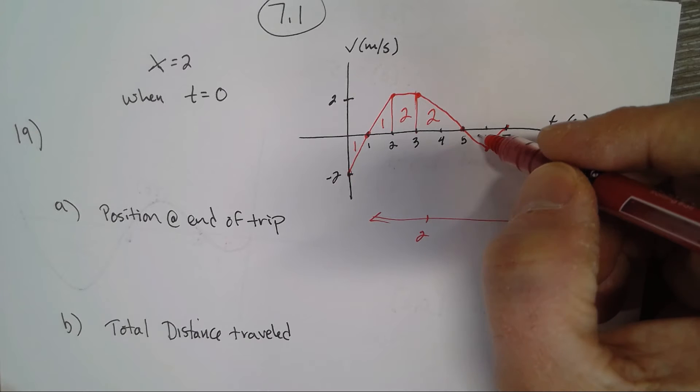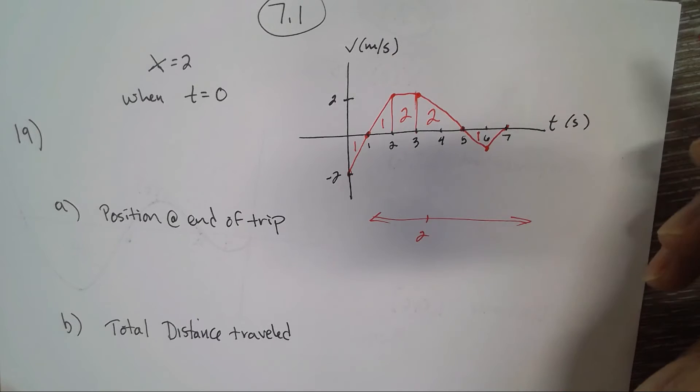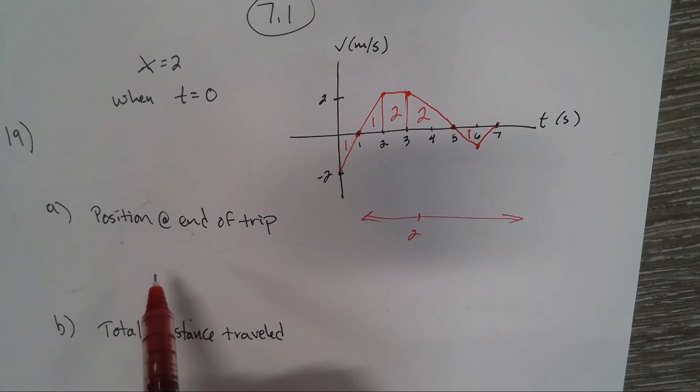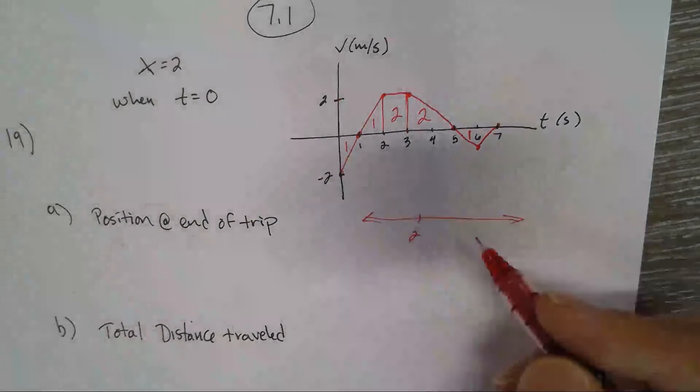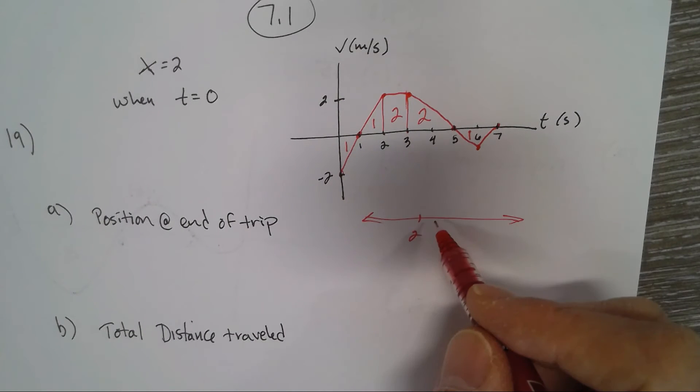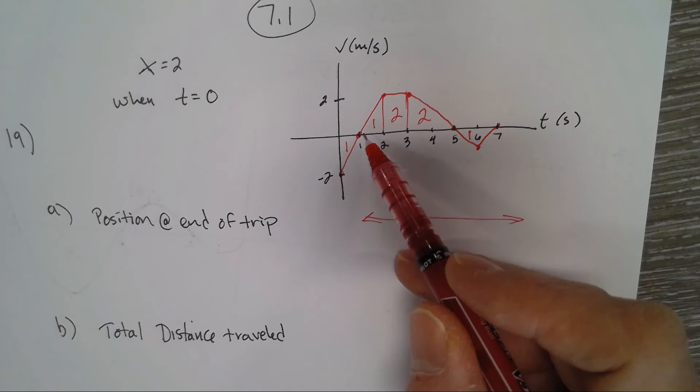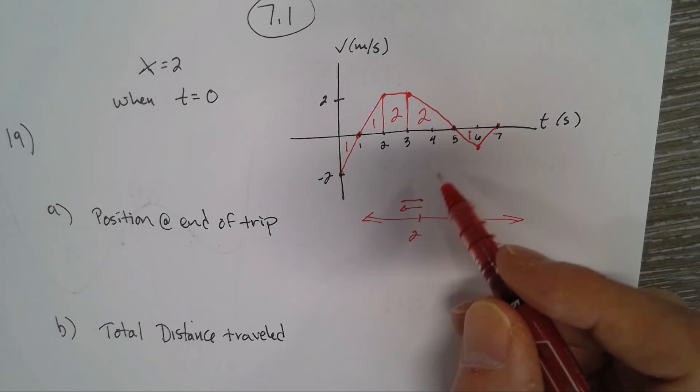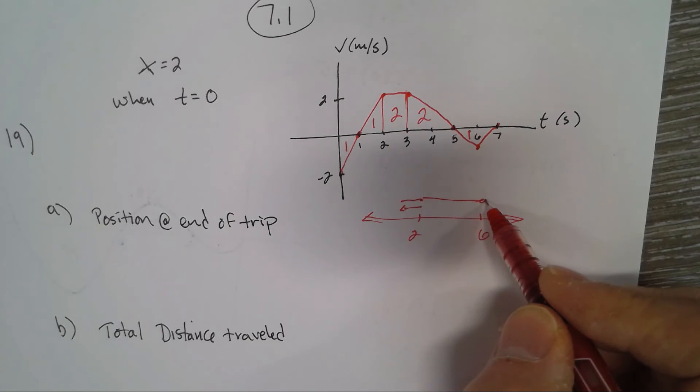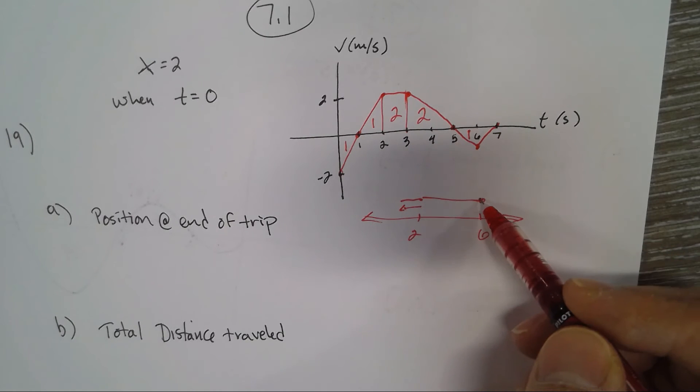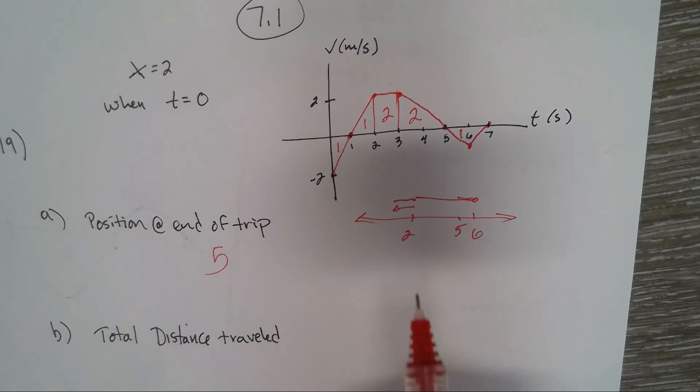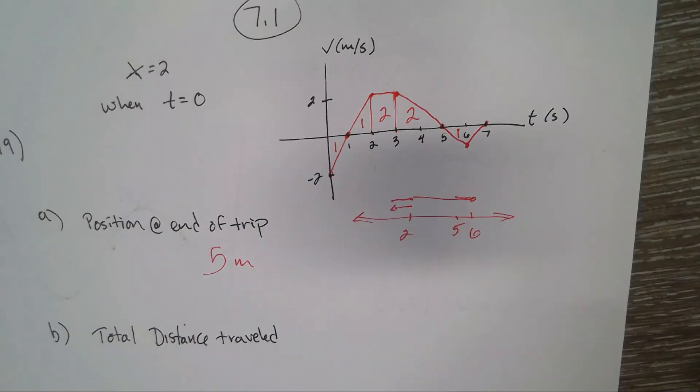Let's figure out the position at the end of the trip. The particle started at 2, then went backwards 1, then forward 1, then forward 4 more - now we're at 6. Then backwards 1, so we're at 5. Where is it at the end of the trip? It's at 5 meters.